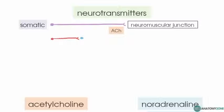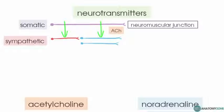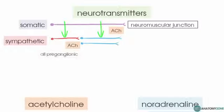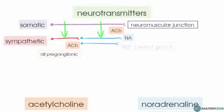In both the sympathetic and parasympathetic nervous systems, all pre-ganglionic neurons release acetylcholine as their neurotransmitter. Almost all post-ganglionic sympathetic neurons — except those which innervate sweat glands — are noradrenergic, meaning they secrete noradrenaline to their target organ. The post-ganglionic neurons that do innervate sweat glands are acetylcholine-secreting.